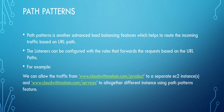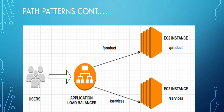As you can see in the diagram, the application load balancer distributes traffic across various sets of EC2 instances. When we enable path patterns, for example, the URL with slash products will go to one specific set of EC2 instances, and similarly slash services, being a separate URL, will go to a separate set of EC2 instances altogether.